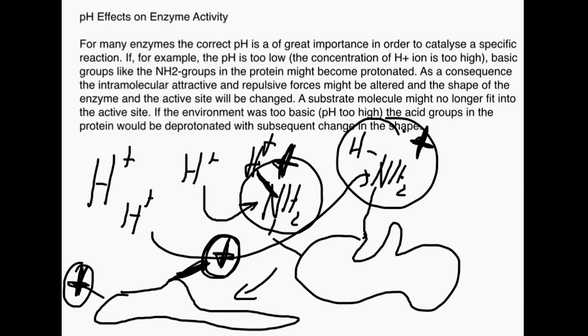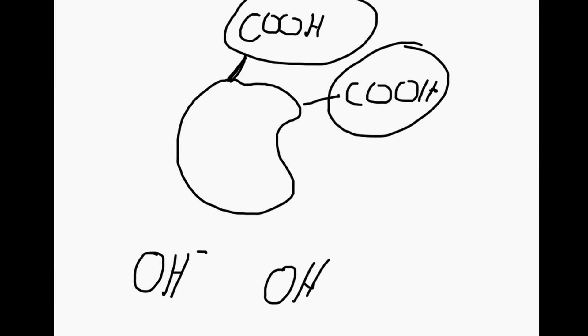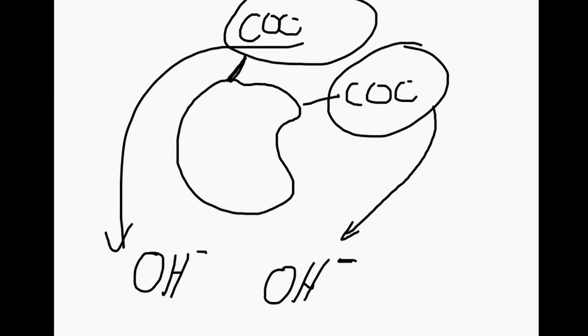The same can happen when we have carboxylic acid groups in the protein. If we have a very high pH, so we have lots of OH minus—that's a high pH, low proton concentration—these protons are taken away and what we are left with are the groups without the protons. So we have COO minus, COO minus.